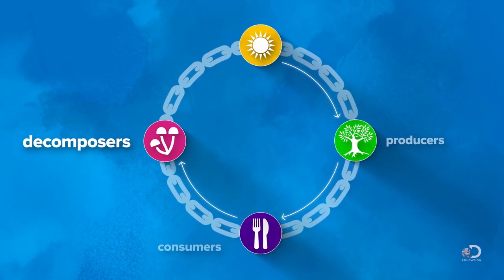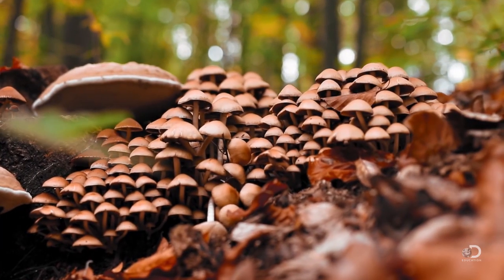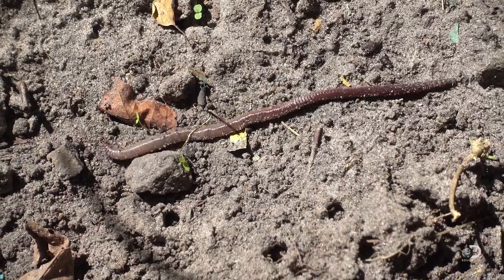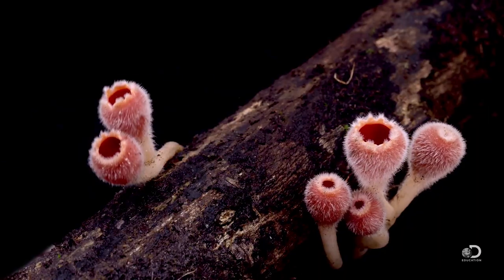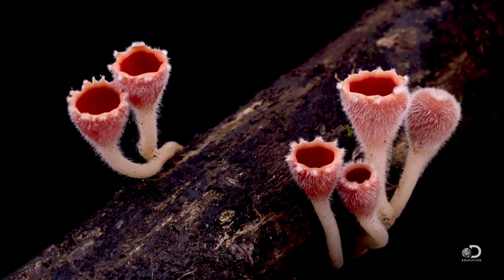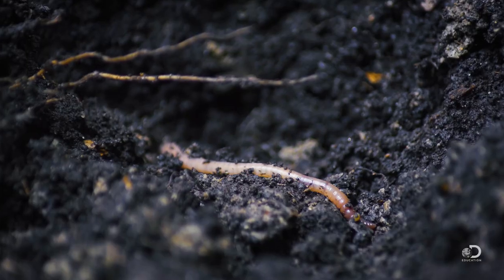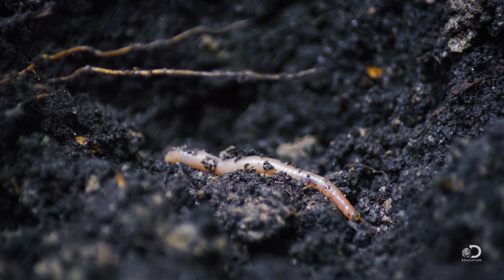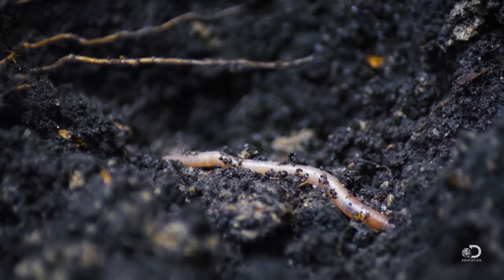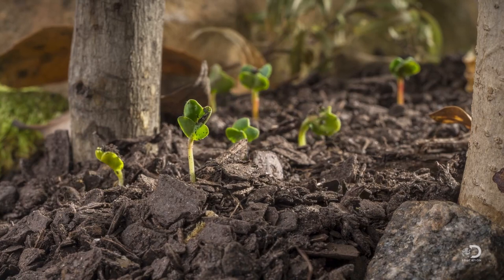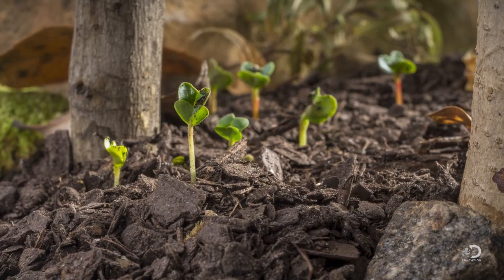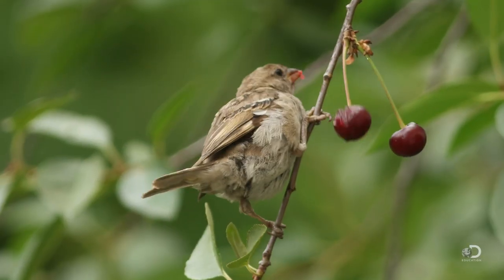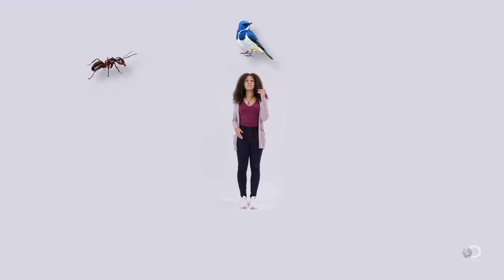And then there are decomposers. Decomposers can be fungi like mushrooms, or animals like an earthworm. Decomposers feed on dead plants and animals, and the waste they leave behind is recycled into nutrients that help nourish plants — and so the food chain continues.